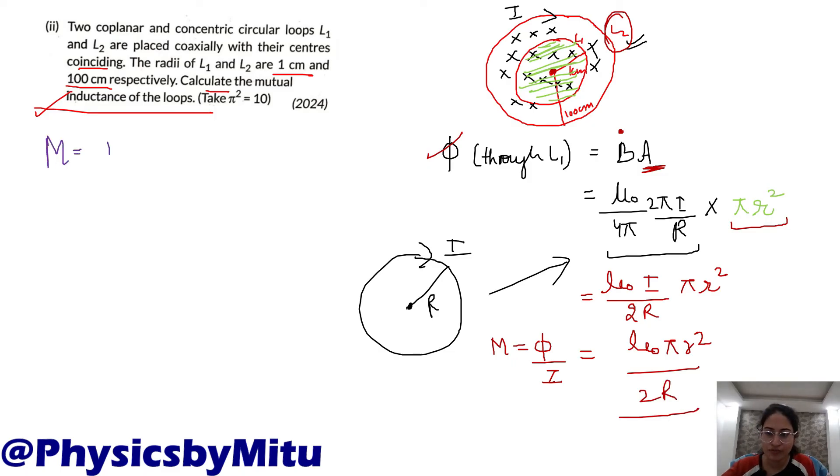M is μ₀. μ₀ value is 4π × 10⁻⁷ times π. Small r value is 1 centimeter which is 10⁻² meter, squared, upon 2 into capital R. Capital R is 100 centimeters which is 1 meter.